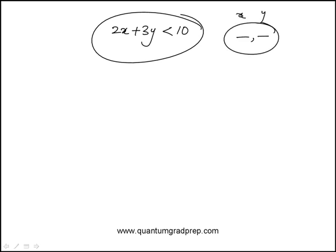We're given this inequality 2x plus 3y less than 10, and we need to find the number of ordered pairs of x and y that satisfy this inequality. Here the numbers are all small. The easiest way to do this is to select values.